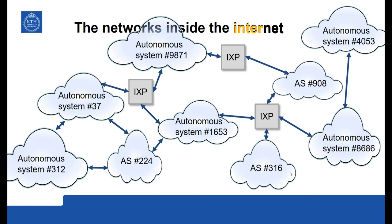One network owner can have one or several autonomous systems. Autonomous systems can be connected bilaterally directly to one another, or they can make peering agreements at internet exchange points. Some autonomous systems are stub networks — only connected to the internet to send traffic to other ASes and receive traffic from them. While other autonomous systems will both send and receive data for the computers connected within them, and also transfer data that passes through the network. For instance, AS224 could use AS1653 in order to reach AS316.